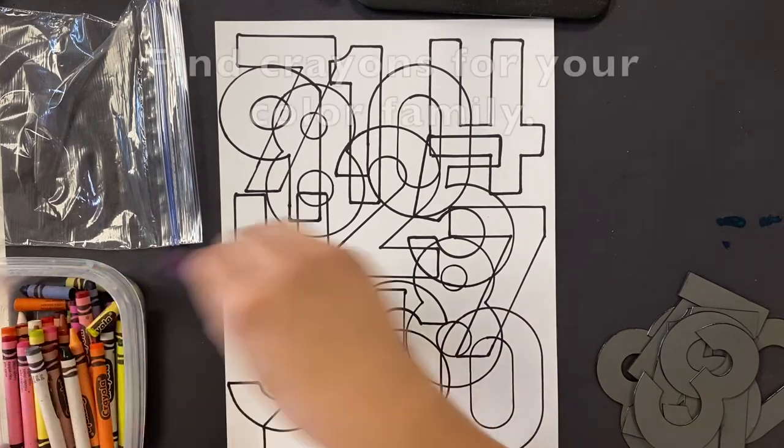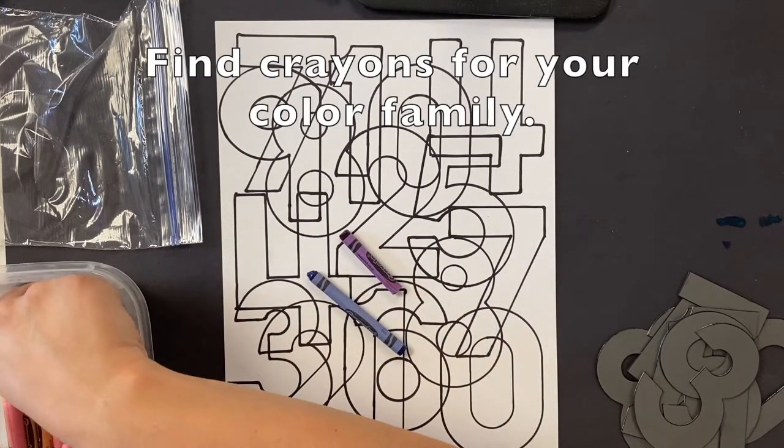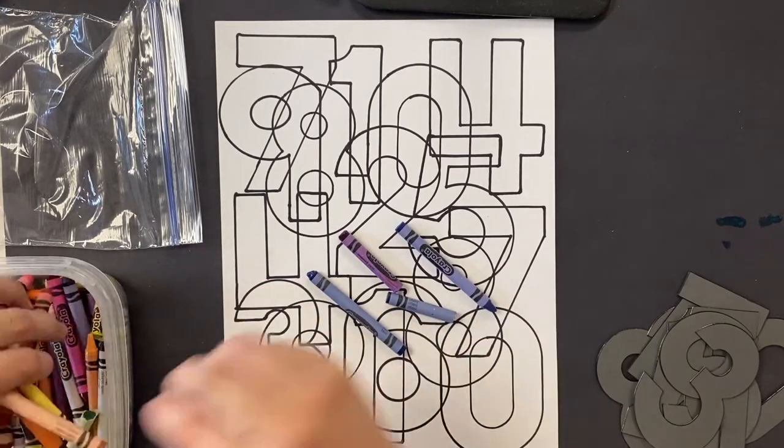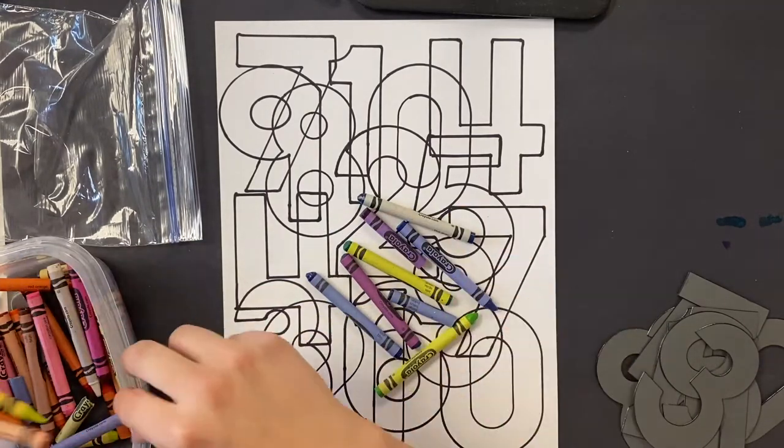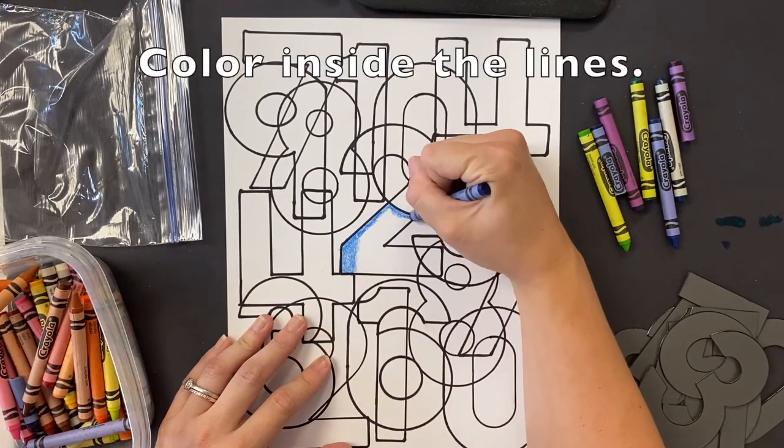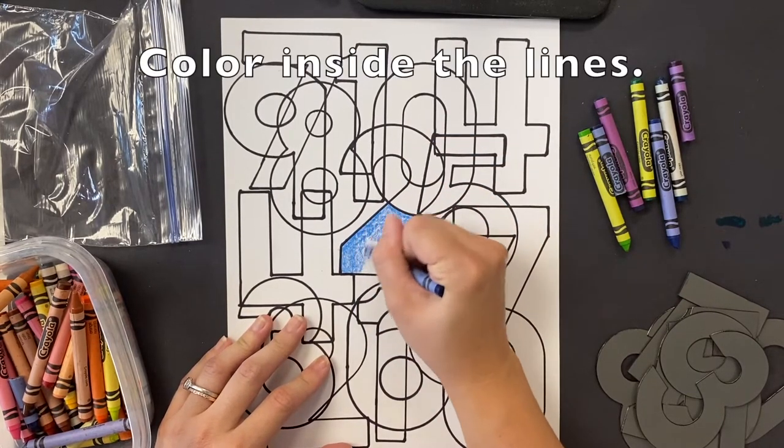Once you have your color family, go ahead and find all the colors that fit into that color family. I'm picking any kind of blues, purples, and greens. Then you need to start coloring in all of your little shapes.